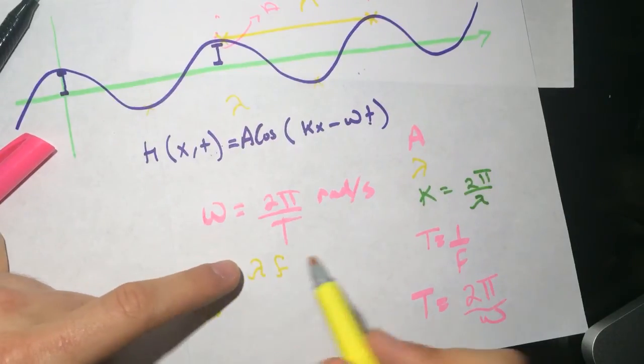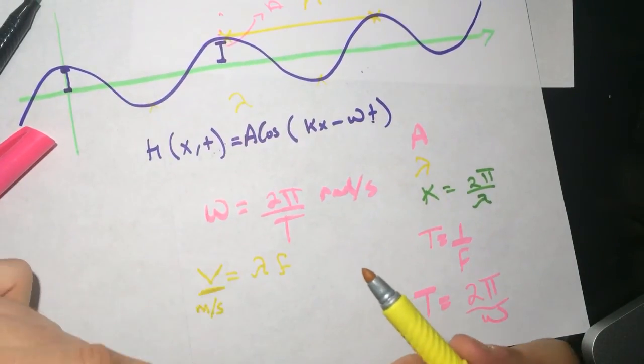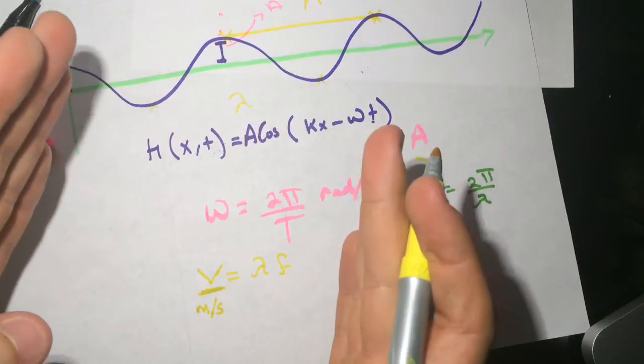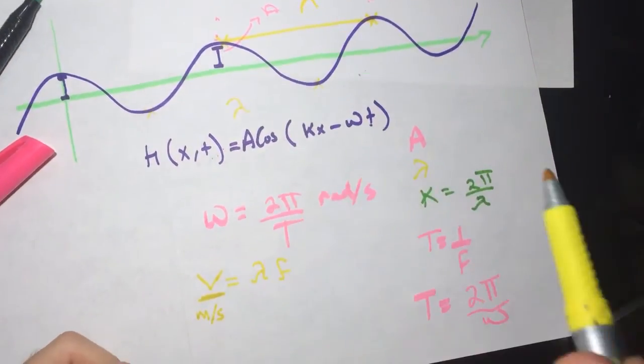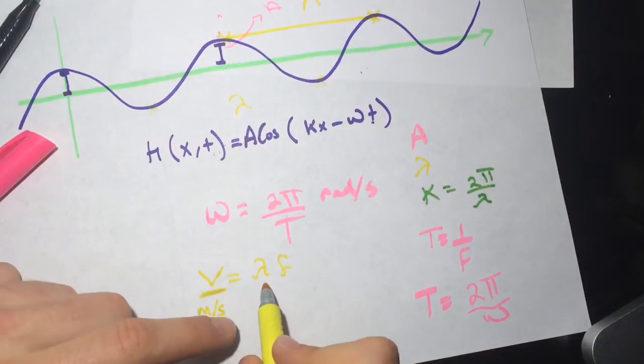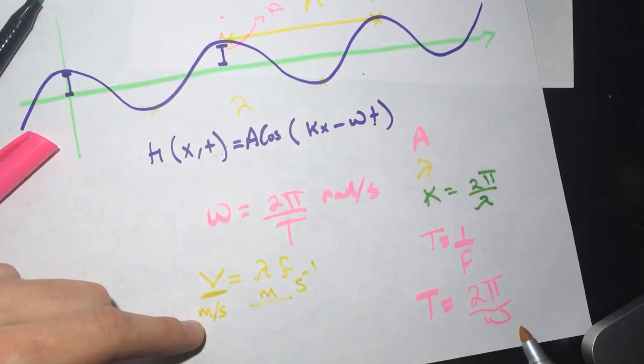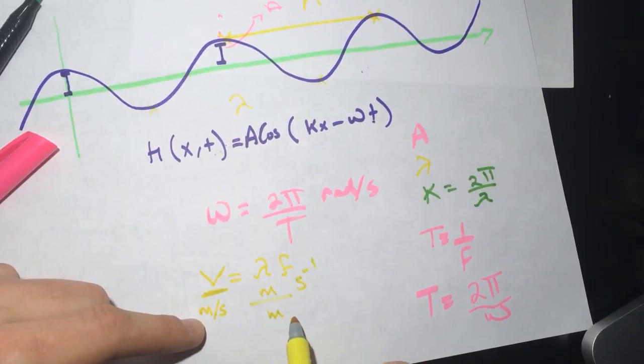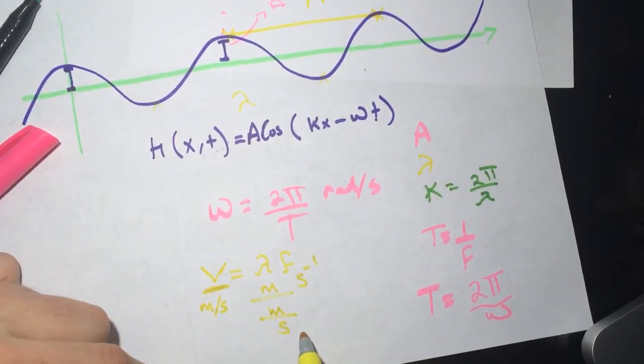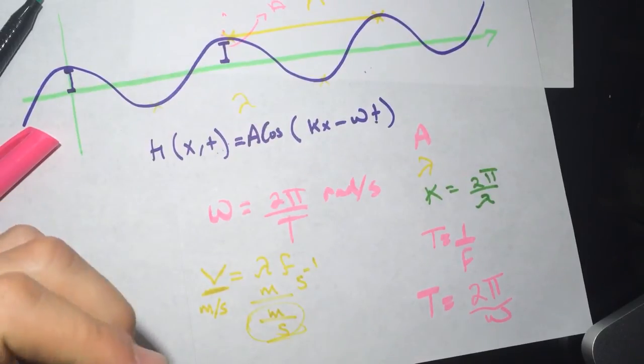And the lambda is just a measurement for length. Because we said it's from here to here, the lambda. So the lambda is meter. And the frequency is second to the power minus one, which is meter divided by second. That's how you remember it.